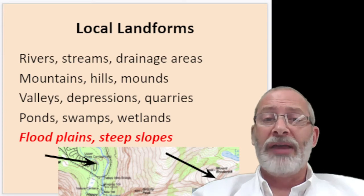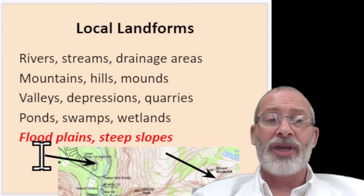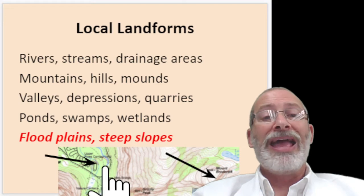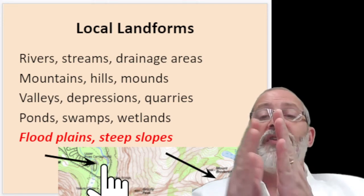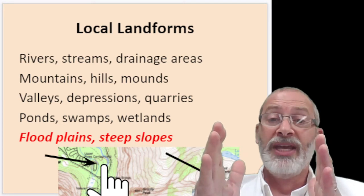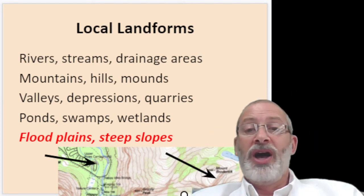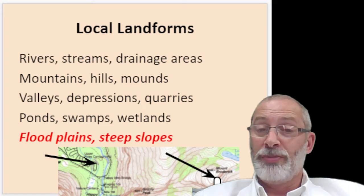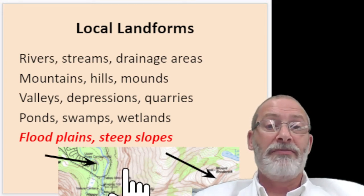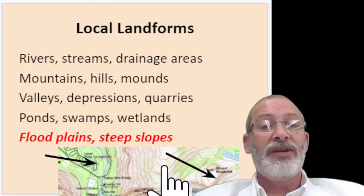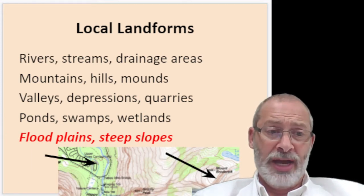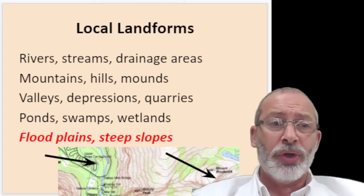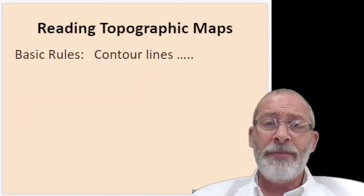Another type of local landform you can identify on these maps is flood plains and steep slopes. Plains are areas where contour lines are very spaced out from one another. Steep slopes, on the other hand, are areas where the contour lines are very close together — like on that island map. The more spaced out the contour lines are, the more gradual the slope.